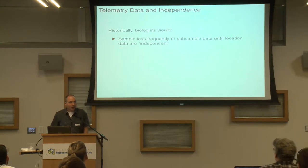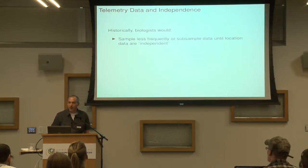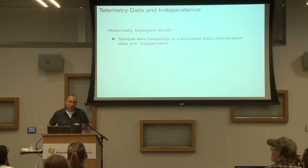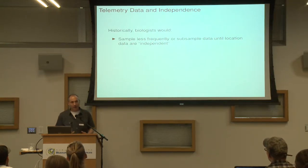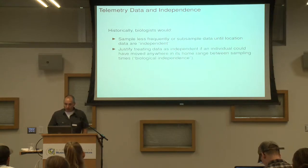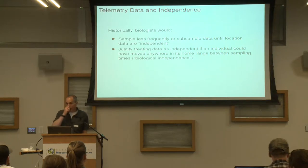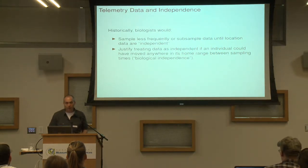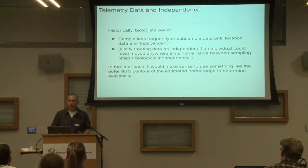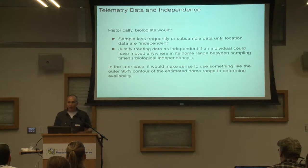Historically, biologists when they had tracking data usually didn't have observations every two minutes or every ten minutes or every hour, so they didn't have to worry too much about whether observations were independent. When they did worry about it, they often just subsampled their data to hopefully justify that observations were far enough apart in time to be independent. Or they would justify independence by saying, well, in a week an animal could have traversed anywhere in its home range, so it's independent from a biological standpoint.